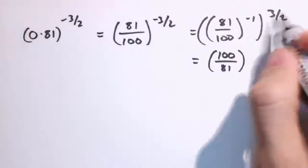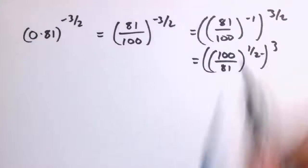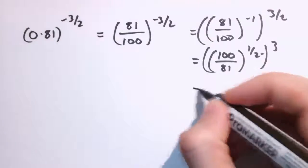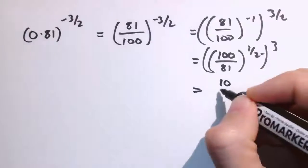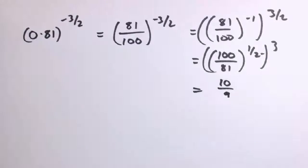And then the 3 over 2 will split up as to the half cubed, so this is the square root of 100 over 81. Now the square root of a fraction is the square root of the numerator divided by the square root of the denominator, so this is 10 divided by 9. The square root of 100 is 10, the square root of 81 is 9.